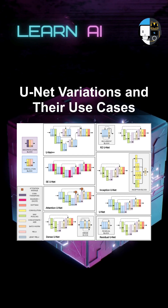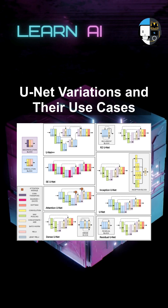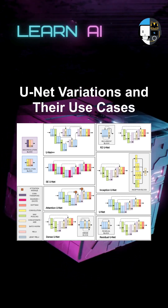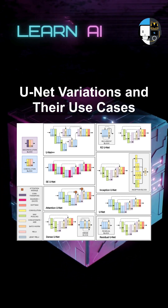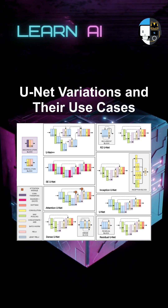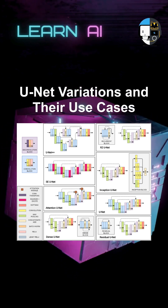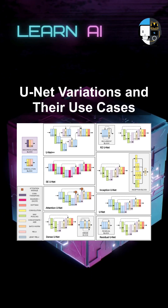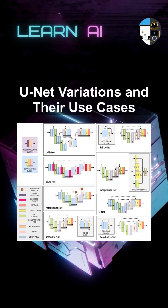These variations demonstrate U-Net's adaptability, allowing it to be tailored for specific use cases and further expanding its applicability across different domains. By understanding these variations, practitioners can select the most suitable model for their particular segmentation task, optimizing performance and accuracy.